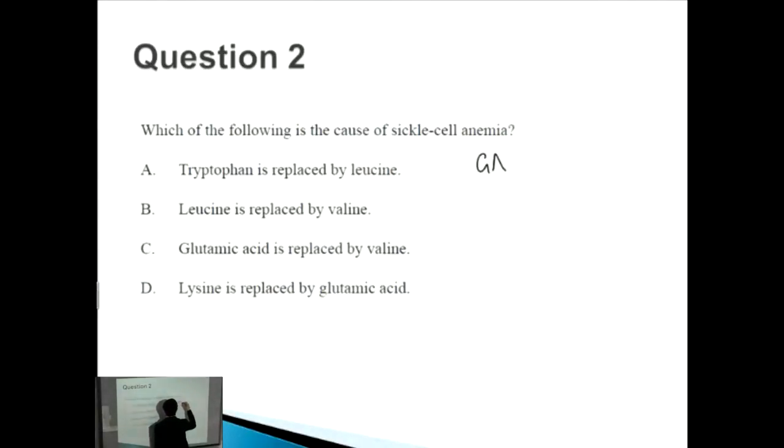In this case, the codon GAG gets turned into GTG. See how there's this one change? This is the change on the DNA. So one of them might have been changed from an A to a T. That's a base substitution mutation.